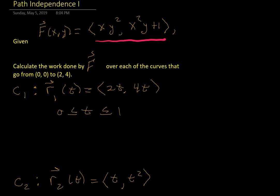This example is going to be similar to our last problem. We're going to take a vector field, which you can see at the top of the screen here underlined in red, and we're going to look at the work done by that vector field on two different paths from the point (0,0) to the point (2,4).